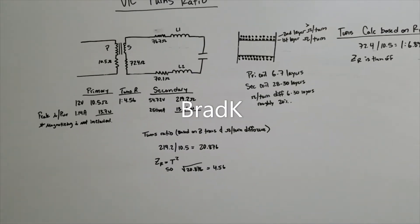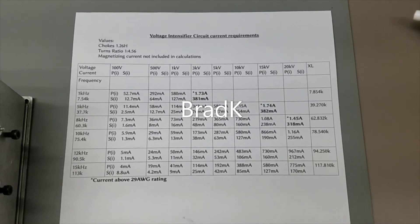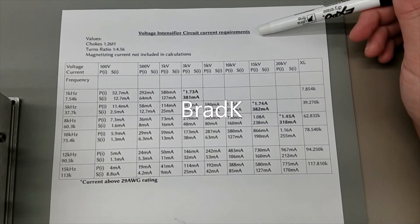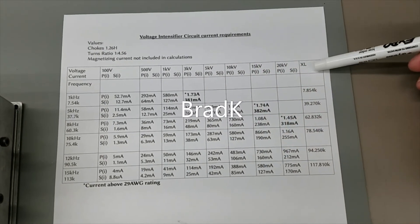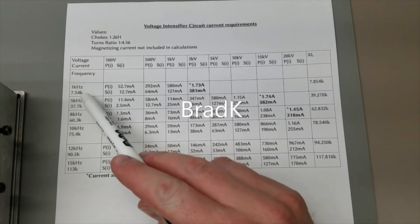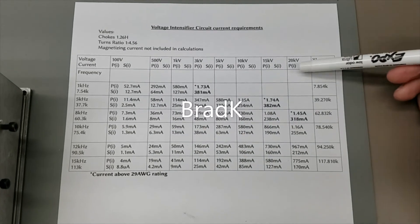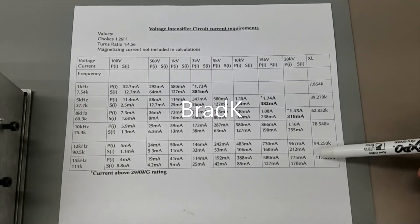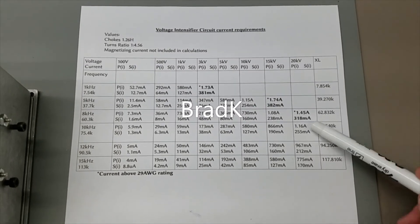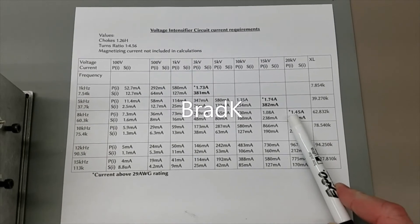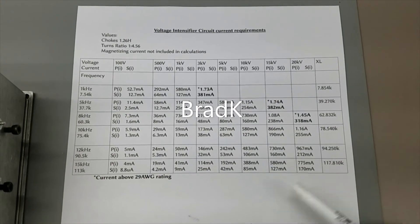So, let's look at some more math here. This is a spreadsheet I made the other day, I just wanted to share. This is VIC current requirements. I'm using this choke value, 1.26 henrys, calculating the reactance of that choke at these frequencies here. 1, 5, 8, 10, 12, and 15 kilohertz. And this is my reactance. It's using just basic Ohm's law. Take my reactance, divide by this voltage, and I get this current here on the secondary side, and this current on the primary side, using the turns ratio, and I calculate those.